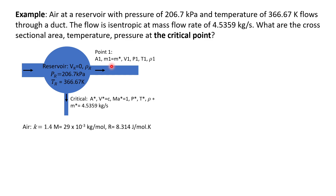Using the system illustration, the mass at point one equals the mass at the critical point — an important concept for addressing conditions at any point in the conduit. We get the physical properties of air: k equals 1.4 from the table, along with the molar mass of air and the universal gas constant.